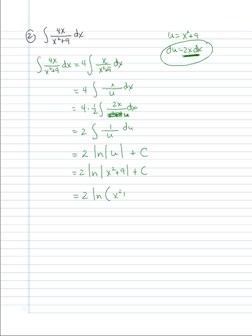You might wonder why there are no absolute value bars in the final answer. Since x²+9 is always positive for all real numbers — whether x is positive, negative, or zero, x²+9 ≥ 9 > 0 — the absolute values are not required. The answer is 2·ln(x²+9) + C.